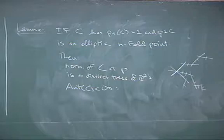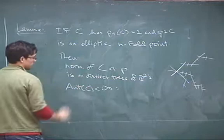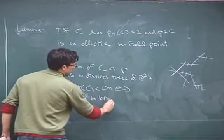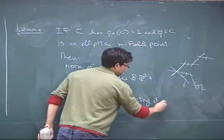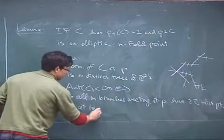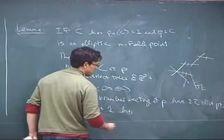We're going to allow semi-stable components, but no more than M minus 1 of them meeting at an elliptic M-fold point. The automorphism group of C is finite if and only if: all M branches meeting at P have at least two distinguished points, and at least one of the branches meeting P has at least three distinguished points.